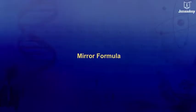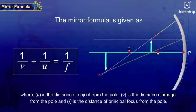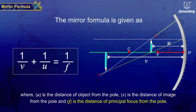Mirror Formula: The relationship between the object distance U, image distance V, and focal length F of a spherical mirror is called the Mirror Formula, and is given as 1 upon V plus 1 upon U is equal to 1 upon F.